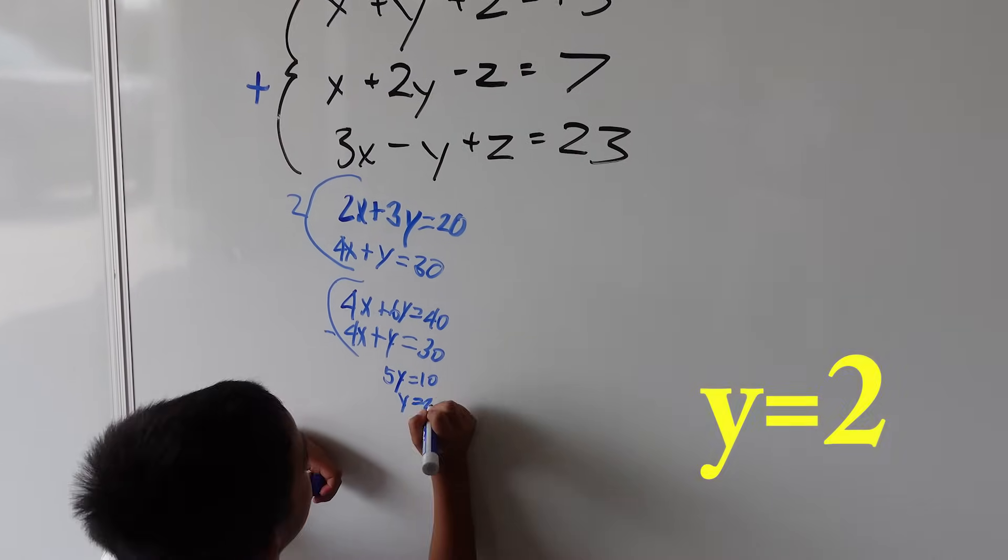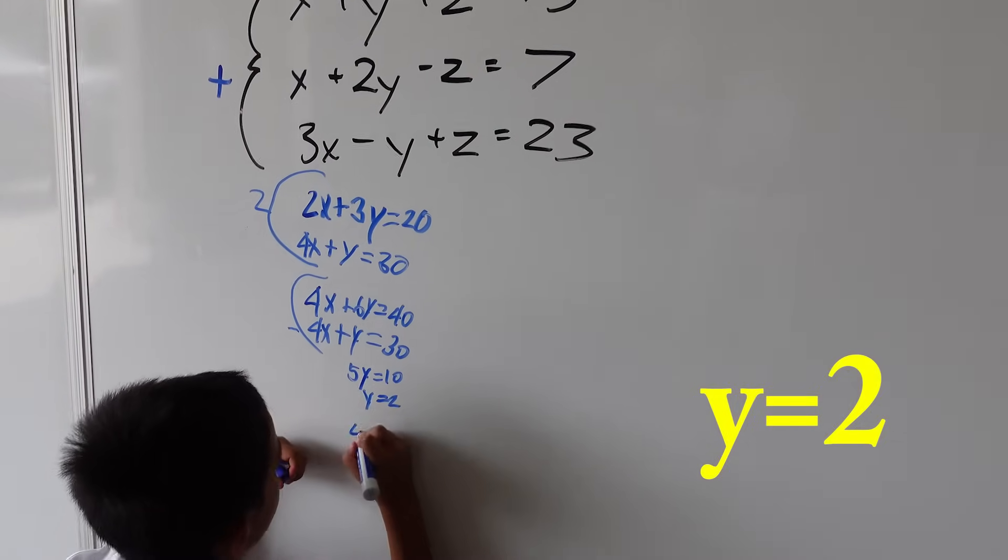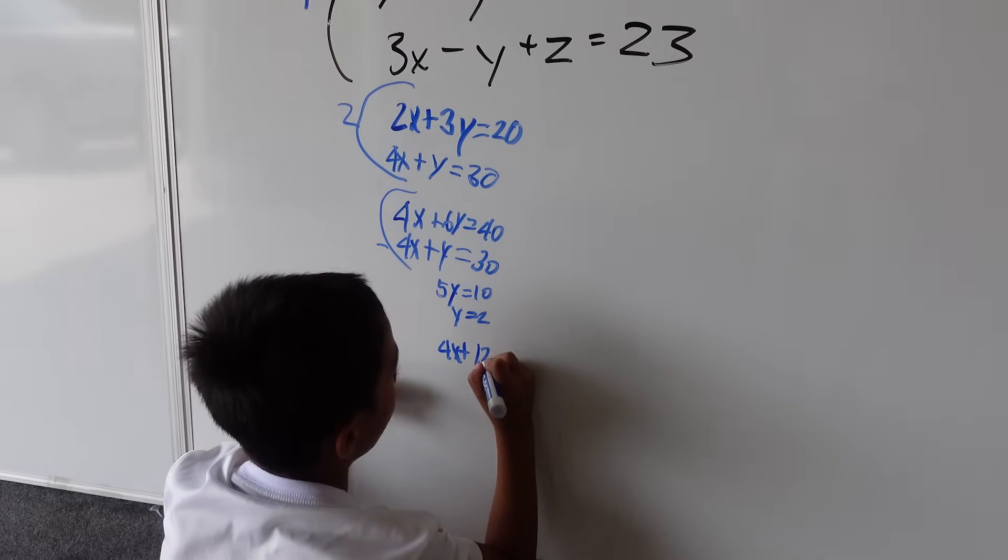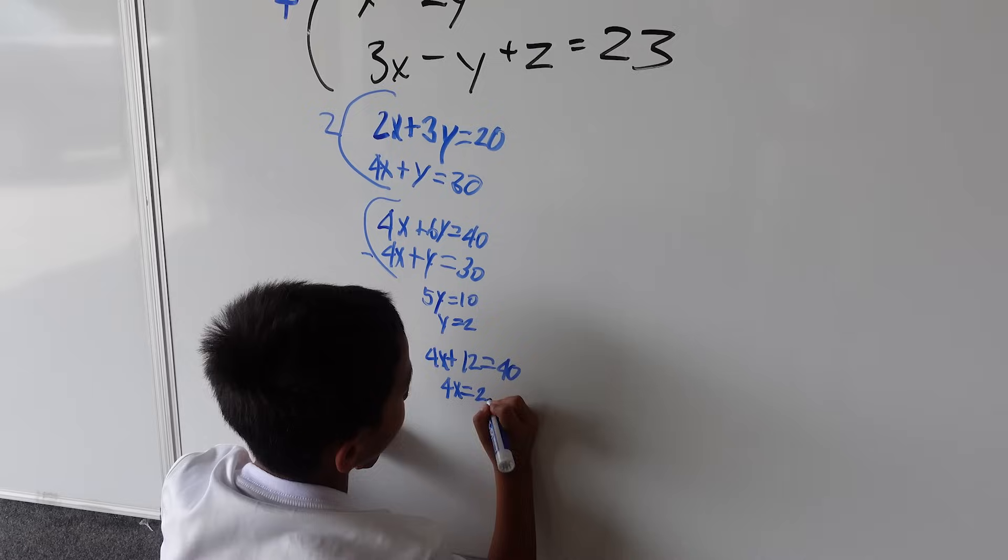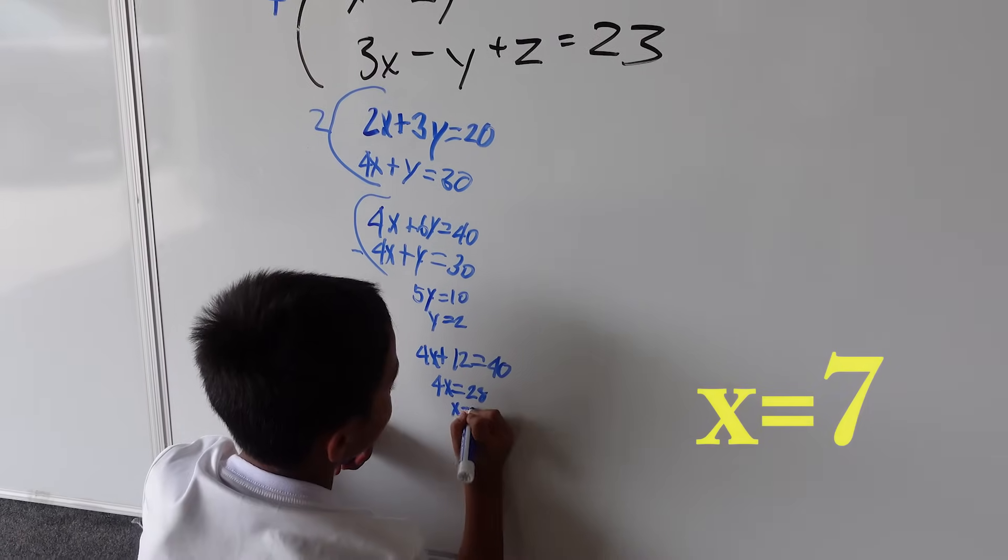So y equals 2. Then you substitute back and get 4x plus 2 equals 30, then 4x equals 28, so x equals 7.